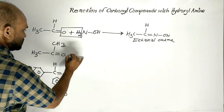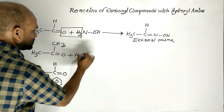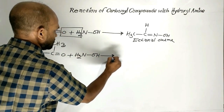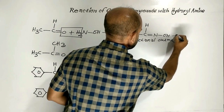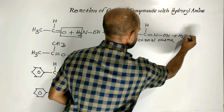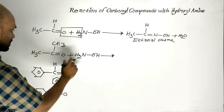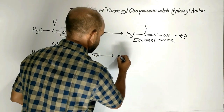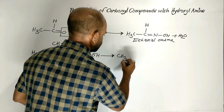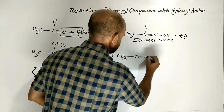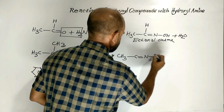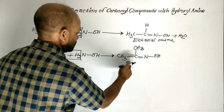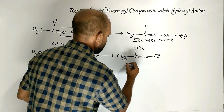Now, this one — propanone with hydroxylamine. Here, water is formed as a by-product. Water gets removed and this compound is formed. This is propanone oxime.